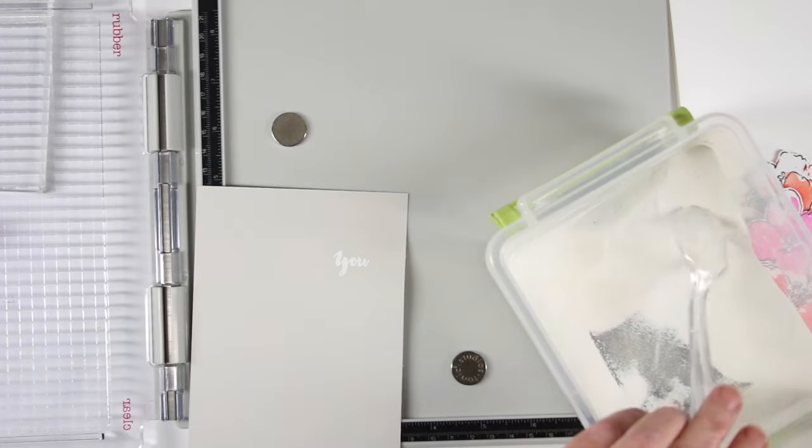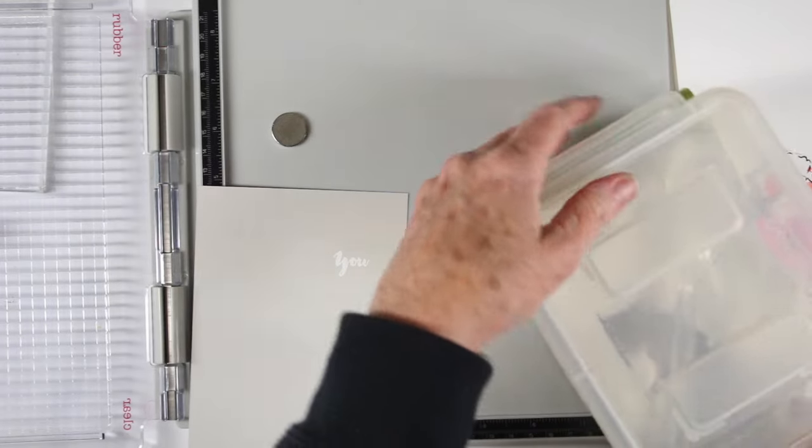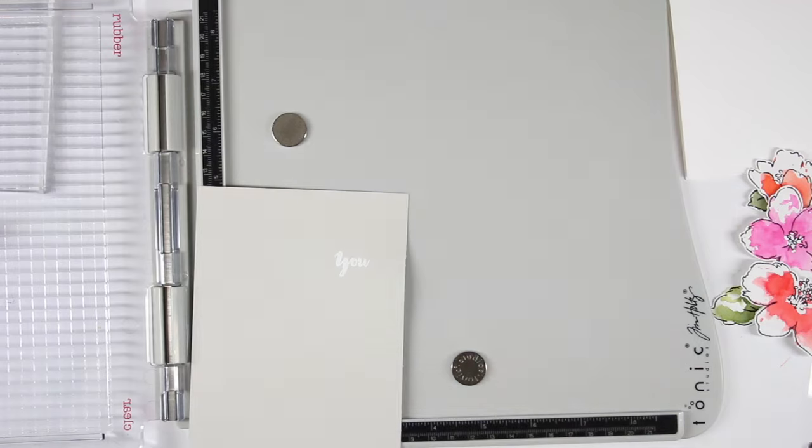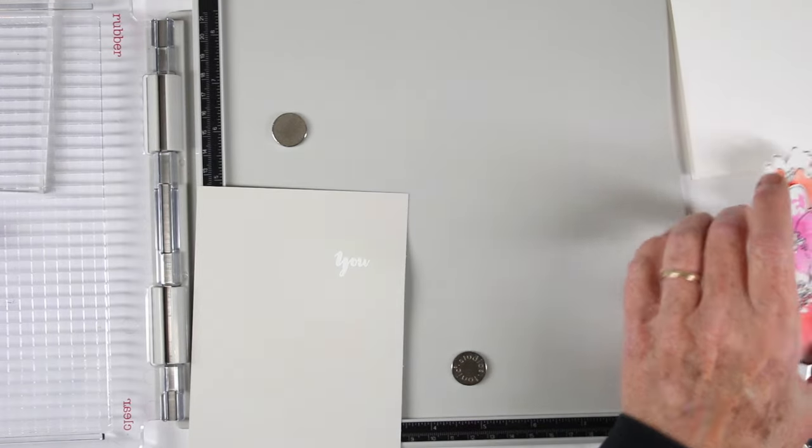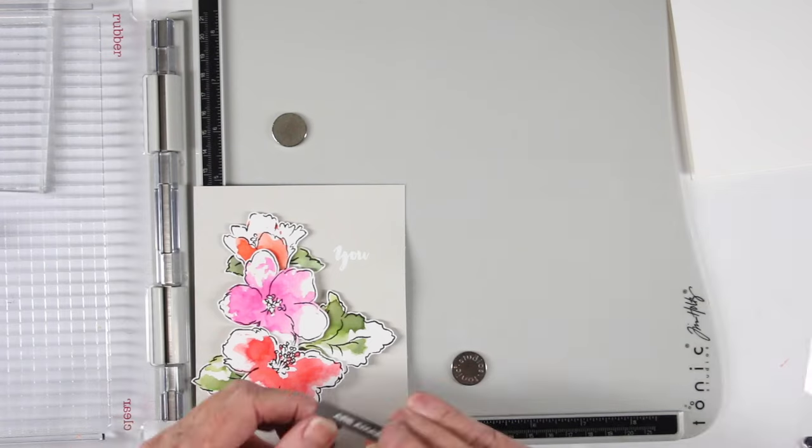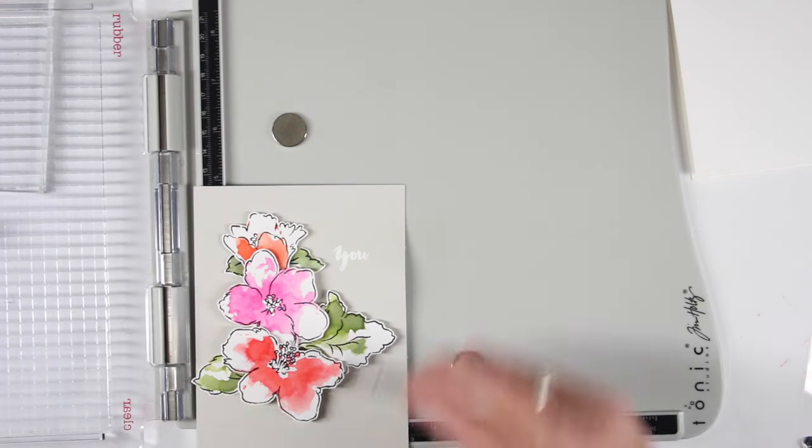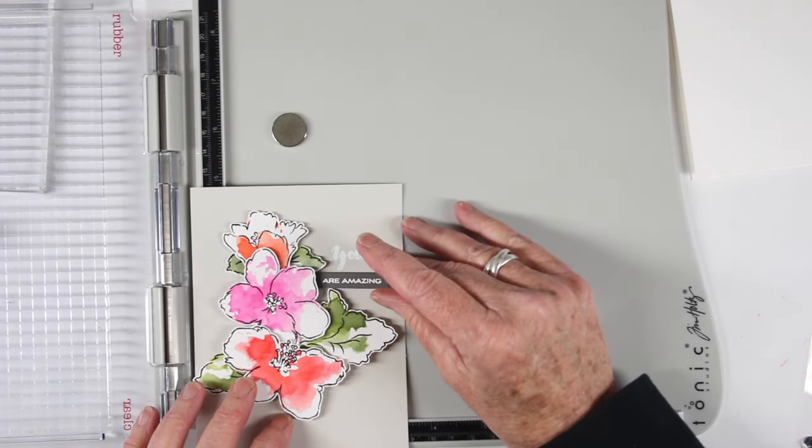The next thing I wanted to do is to white emboss my message. And then I can just use my heat tool to go ahead and set the embossing powder. At this point I'm dry fitting everything together before I adhere it down just to make sure that I like it.